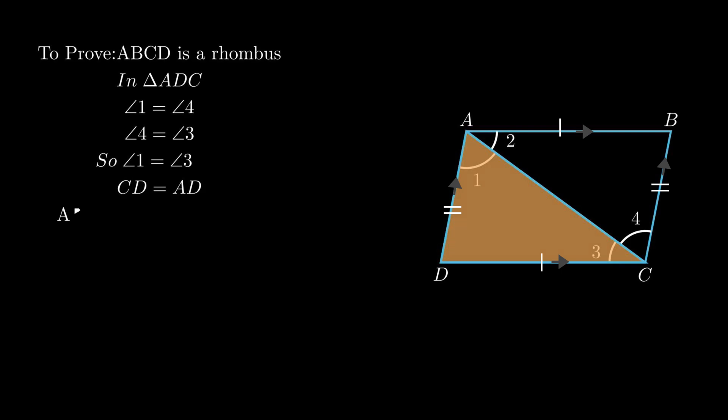Since ABCD is a parallelogram, therefore opposite sides are equal, that is side AB equals side CD and side AD equals side BC.